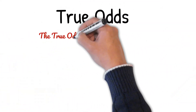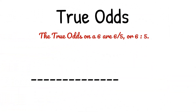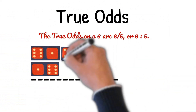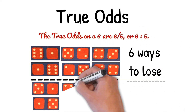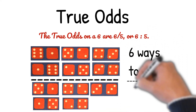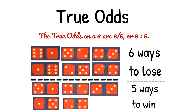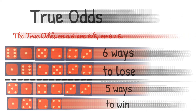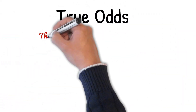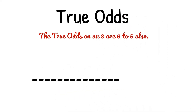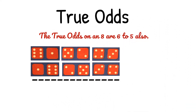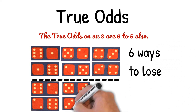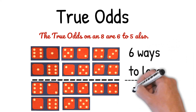The true odds on a six are 6 to 5, or 6 to 5 as a ratio — six ways to lose, five ways to win. The true odds on an eight are also 6 to 5: six ways to lose, five ways to win.